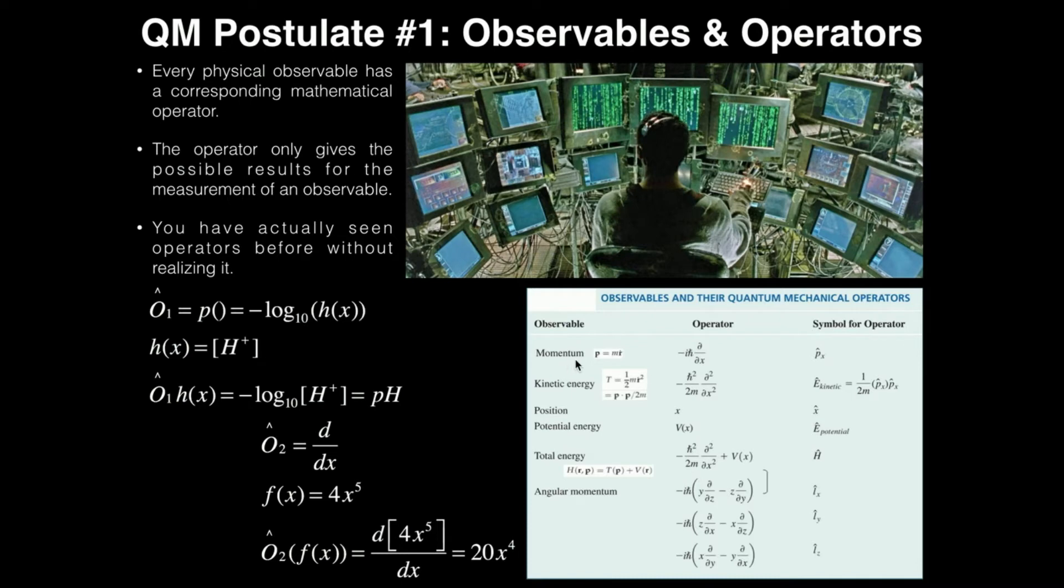For example, linear momentum's operator is going to be negative i h bar times the first derivative with respect to x. So basically, what an operator does is it performs some mathematical operation on a function. And that function we'll see in another video is going to turn out to be the wave function. So kinetic energy's operator, if you wanted to determine its possible value, would be negative h bar squared over 2m times the second derivative with respect to x. And it turns out that what we would normally do when we actually get into problems is we would use these operators on a wave function, and then we would integrate it.